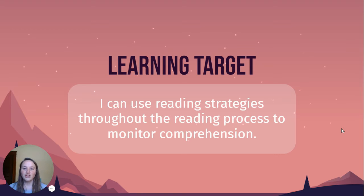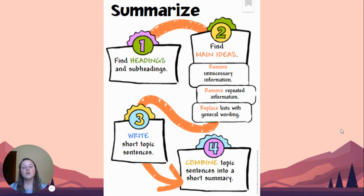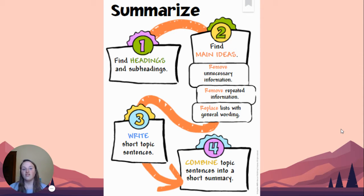Our learning target for today is: I can use reading strategies throughout the reading process to monitor comprehension. One of the ways you can monitor your comprehension is by summarizing a section of the text — looking at the headings and subheadings, then finding the main idea: what is the author really trying to help me understand in this section?